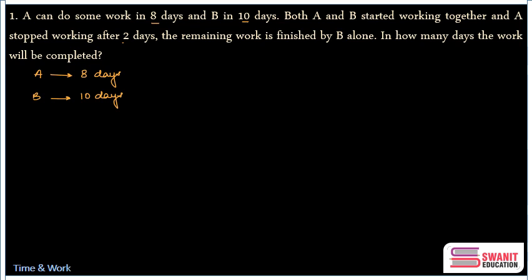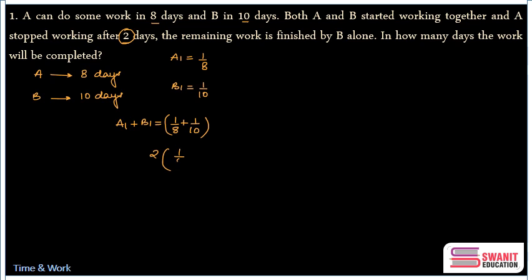Both started working together and after two days A left. A's one-day work by the unitary method is 1/8, and B's one-day work is 1/10. If they work together, their combined one-day work is 1/8 + 1/10. Since both work for two days, in two days they finish (1/8 + 1/10) × 2 amount of work.